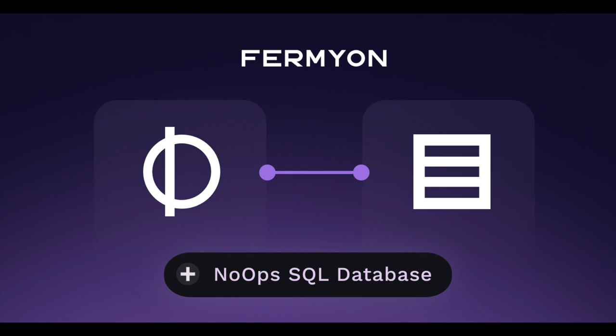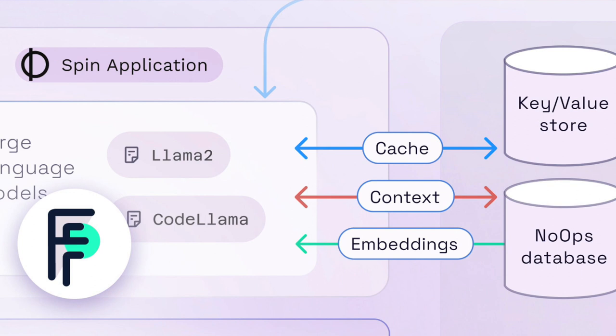We did that first with key value storage, and then we paired it with Turso. Turso does a distributed SQLite database, so we embedded a local SQLite database for SQL access locally. When you deploy into Fermion Cloud, it provisions you a SQL instance and a Turso-style SQLite instance in our cloud. So we've got key value storage, database, and now we add AI inferencing into the mix.